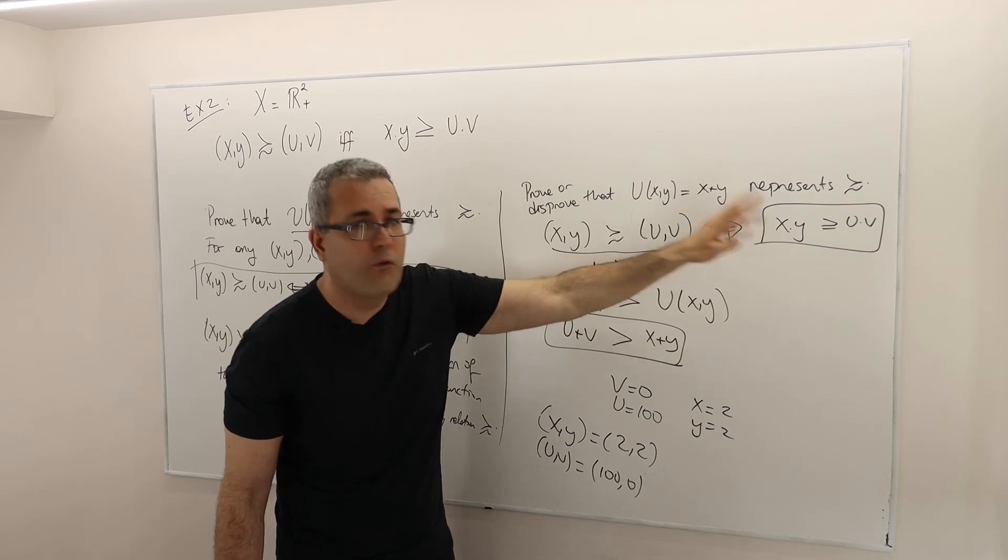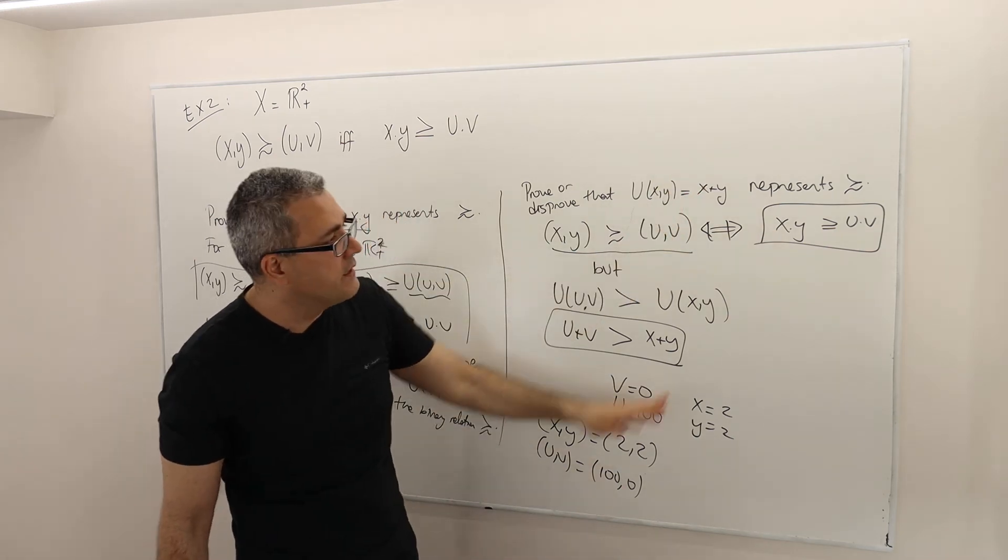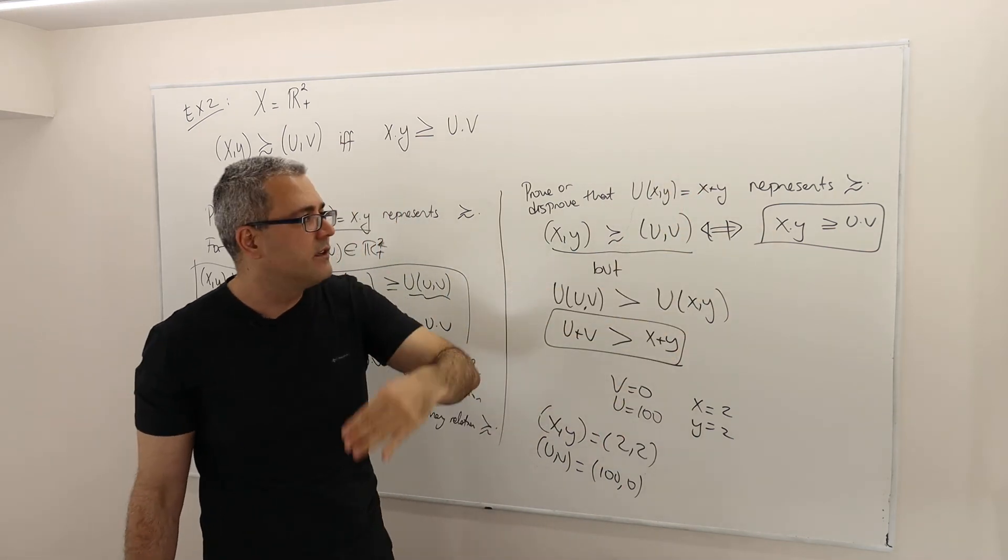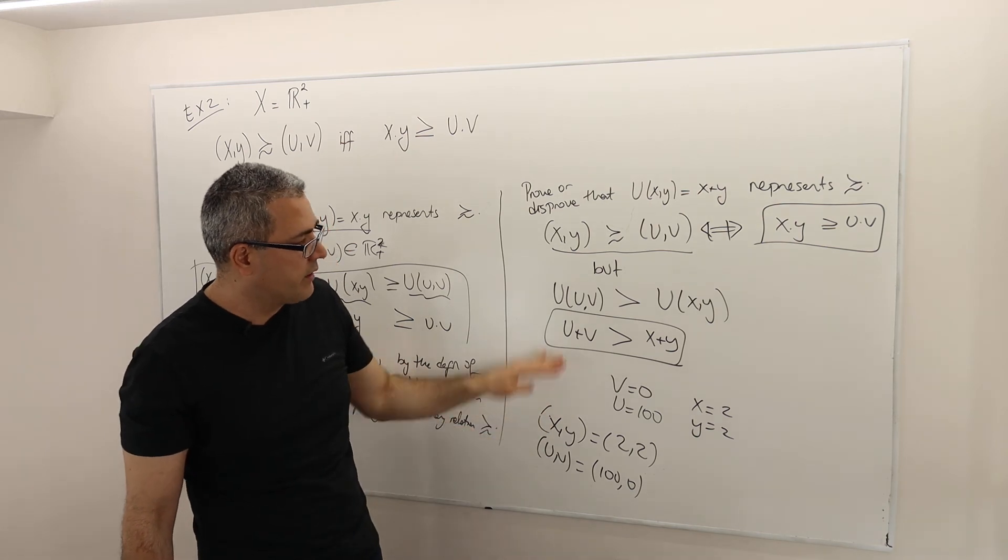Because X times Y is equal to 4, and U times V is equal to 0. So 4 is greater than or equal to 0. Hence, X, Y is at least as good as U, V.